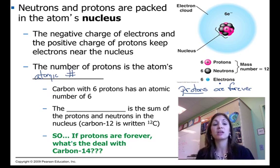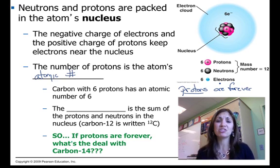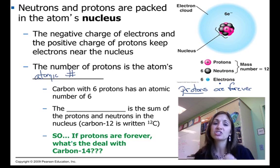Oxygen, atomic number eight, always has eight protons. If it has seven, it's not oxygen, it's nitrogen. So we need to pay attention to those numbers of protons. Protons are forever.